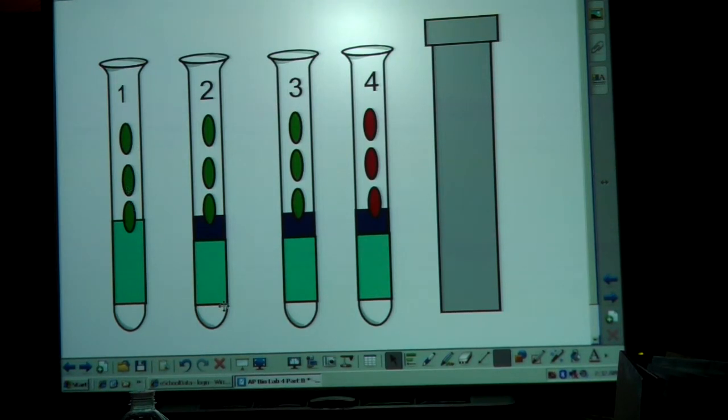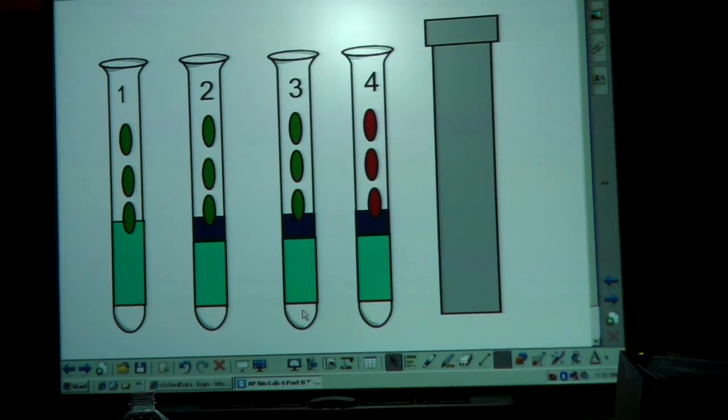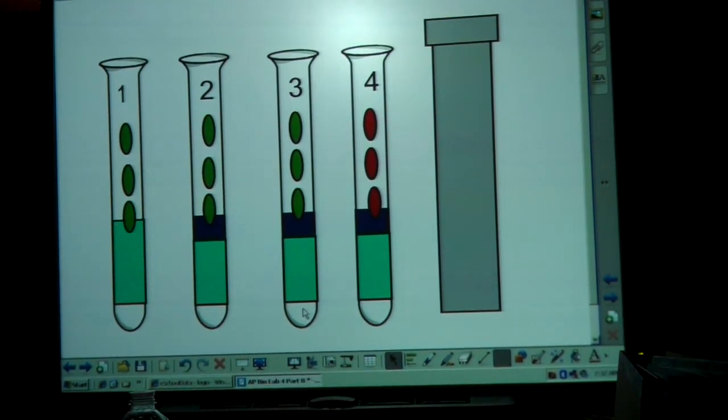Number two gets one milliliter of phosphate buffer, three mils of distilled water, one mil of the DPIP, and three drops of the unboiled chloroplast. Number three is going to get one mil of the phosphate buffer, three mils of the distilled water, one mil of the DPIP, and three drops of the unboiled chloroplast.